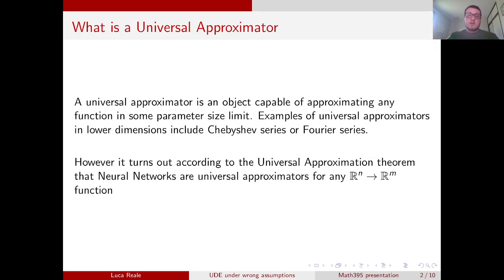So first of all, what is a universal approximator? A universal approximator is an object capable of approximating any function to some parameter size limit. Examples of universal approximators in lower dimensions include Chebyshev series or Fourier series.